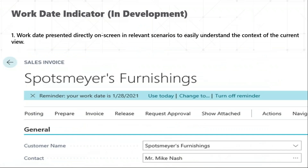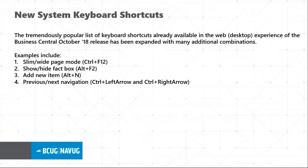Work date indicator is in development. It gives you a reminder of what your work date is, and you can use today's date, turn off the reminder, or change it — so you can post your documents appropriately. Keyboard shortcuts: a very helpful feature is slimming and widening of pages using Ctrl+F12; showing and hiding the fact box using Alt+F2; creating new items using Alt+N; and navigating left and right using Ctrl+Left Arrow and Ctrl+Right Arrow respectively.